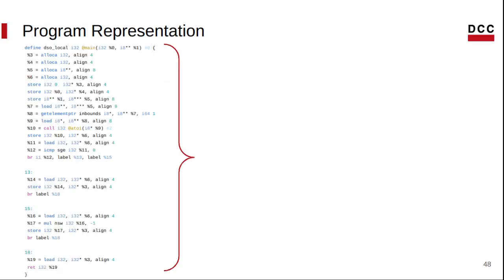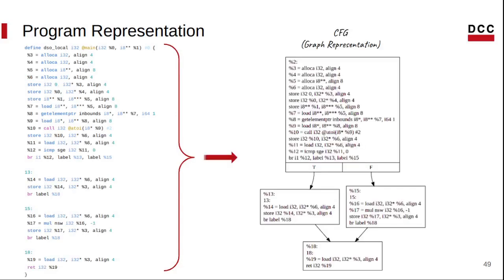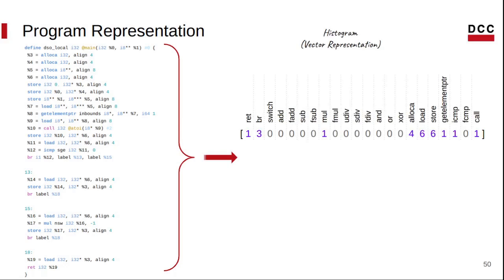And using an intermediate representation, we can create a program representation that may serve as the input for classifiers. This representation can be in the format of a graph or a vector. Let us consider the IR that was previously presented. This graph represents this IR, and it can be used as the input for a model. Of course, we need to specify what are the branches and nodes and what is the relationship between them. A histogram is another type of representation that can be used to count the number of operation codes present in a program. For instance, since the IR has six load operations, the histogram will store this value in the vector position that corresponds to the load instruction.